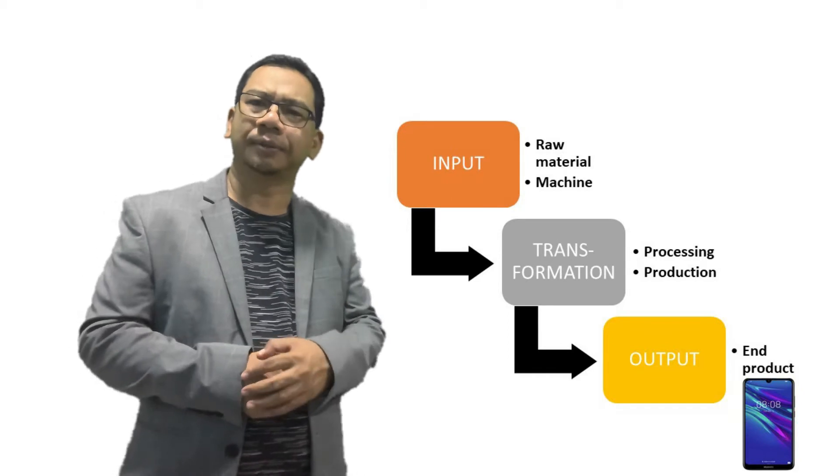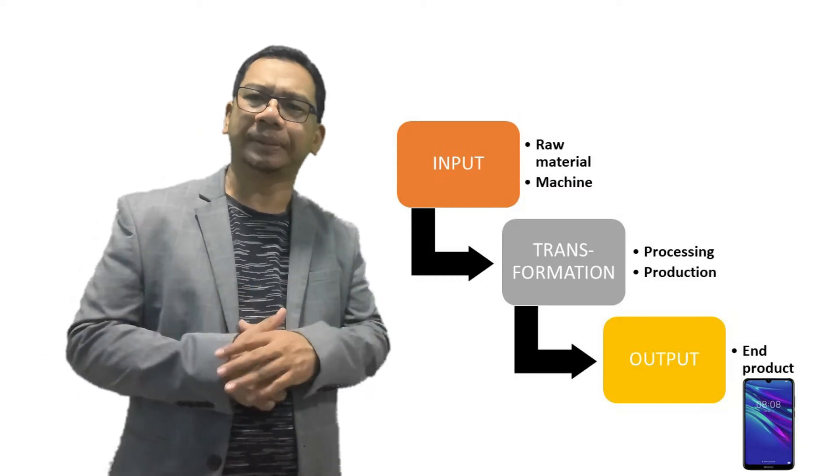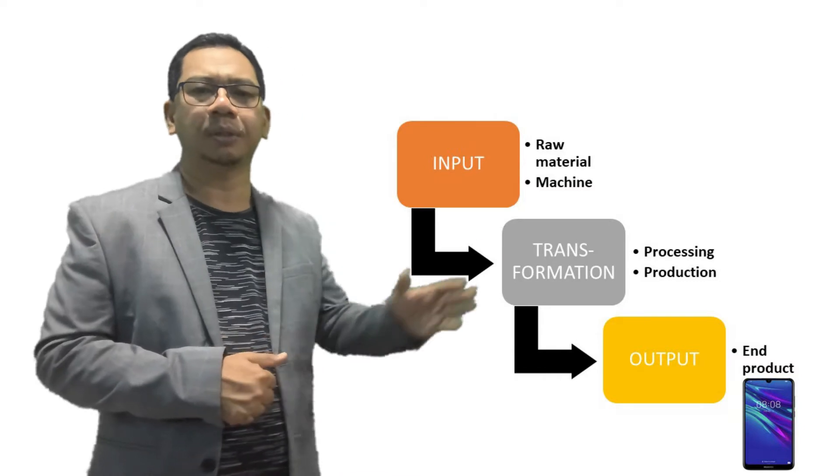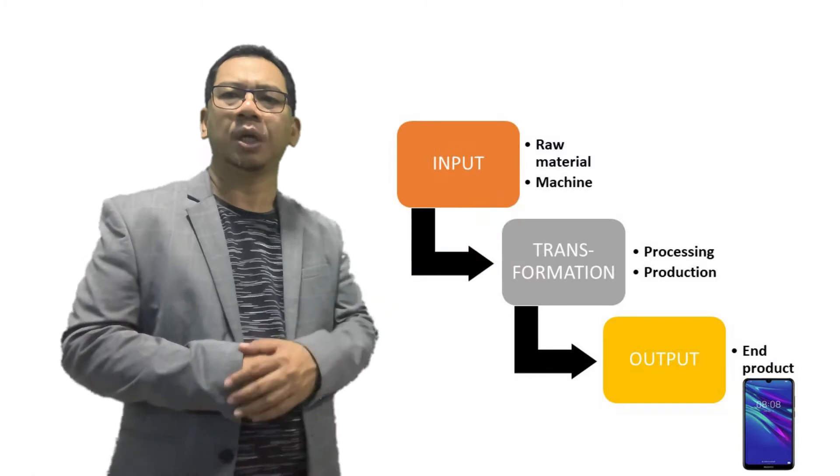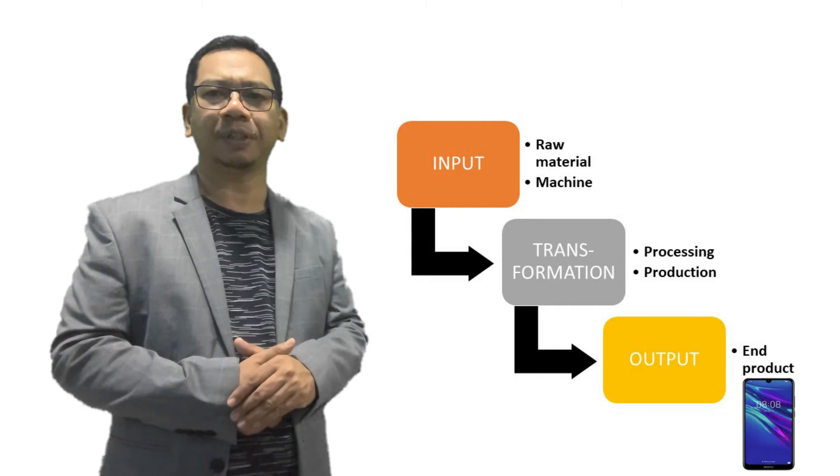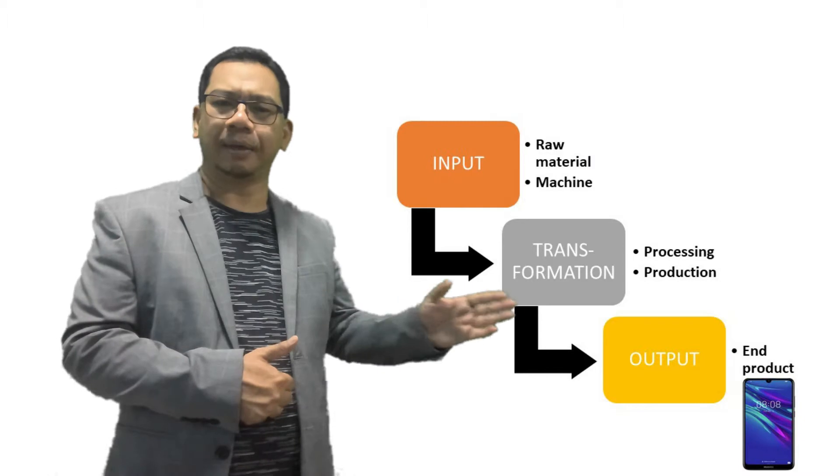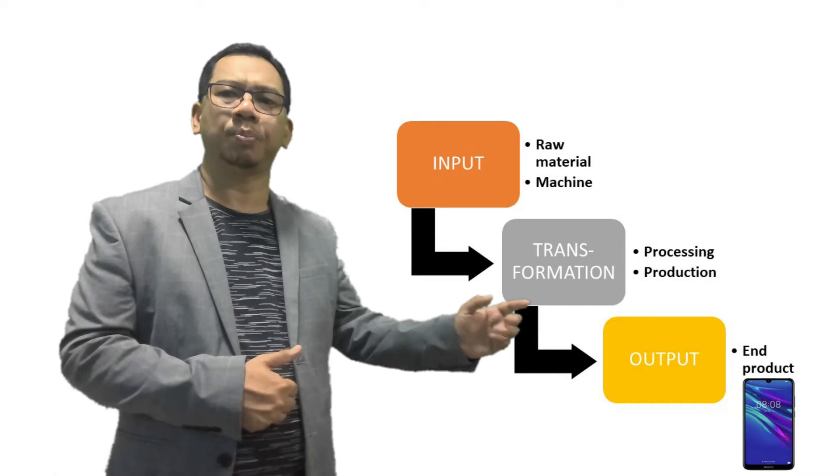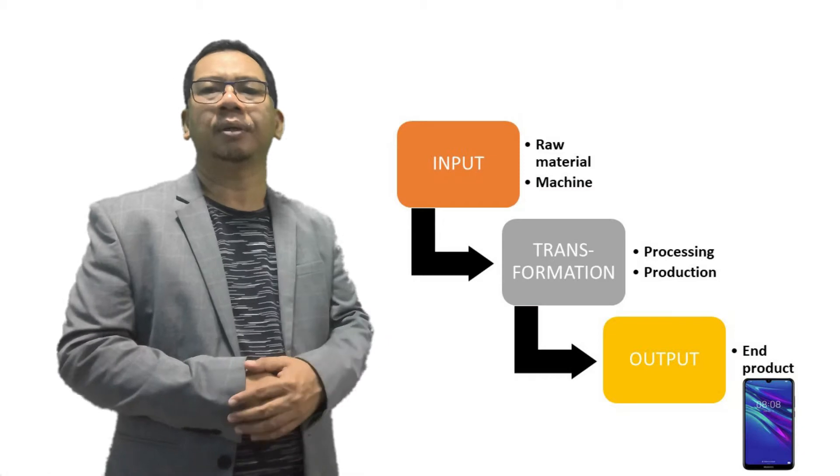Next, when all inputs are ready, they will be processed by certain procedures or methods. This is the stage we call transformation process, when we transform all the inputs to become something functional and has value. And lastly, once the transformation process completed, we produce end product and it is ready for the customers.